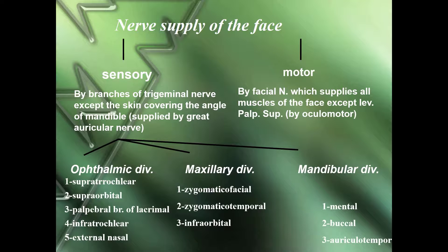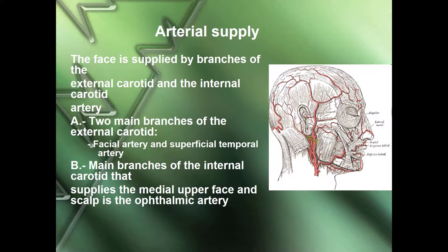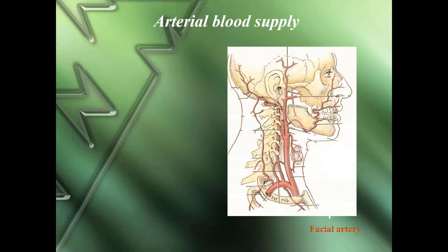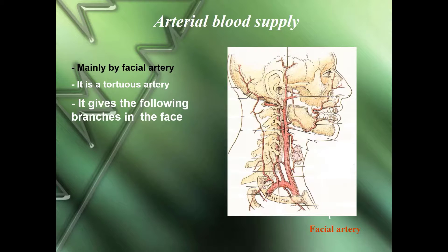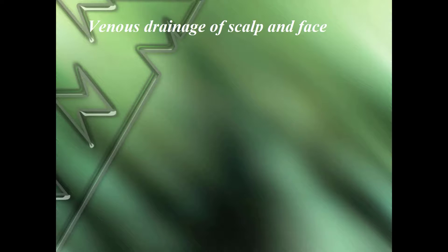The arterial supply: the face is supplied by branches of the external carotid and internal carotid arteries. The two main branches of the external carotid are the facial artery and the superficial temporal artery. The main branch of the internal carotid artery supplying the medial upper face and scalp is the ophthalmic artery. The facial artery has a tortuous course and gives the following branches in the face: inferior labial artery to the lower lip and superior labial artery to the upper lip.